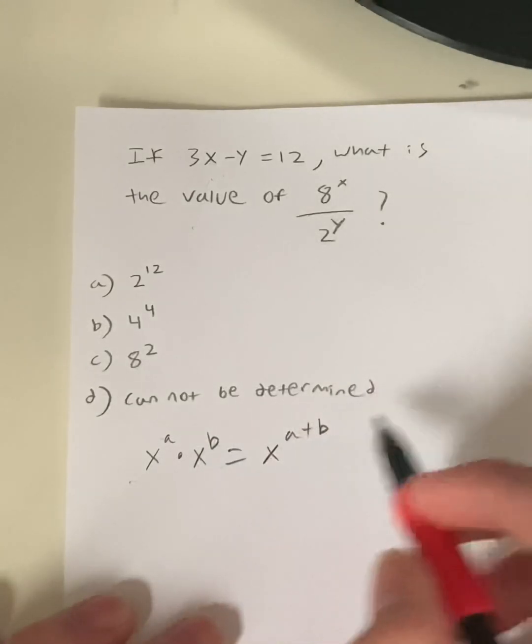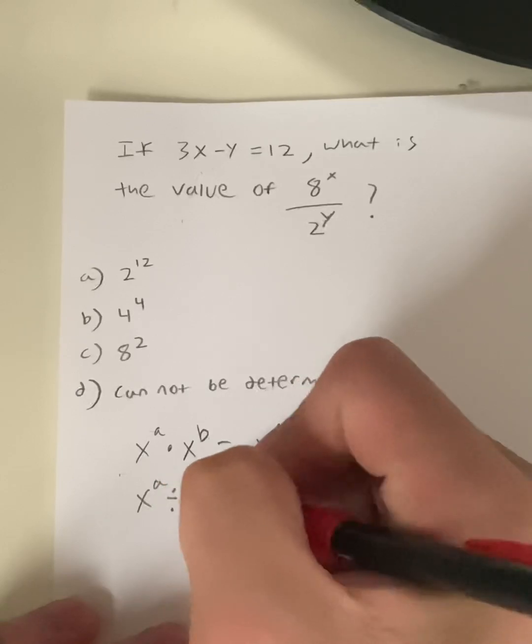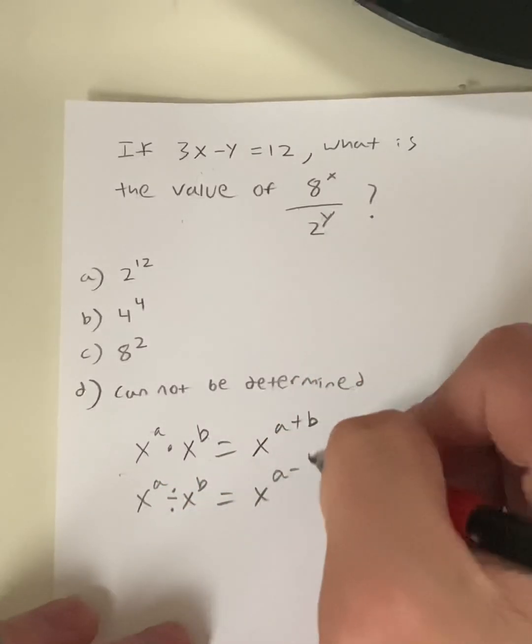You keep the same base and just add the exponents. What if it's x^a divided by x^b? That's just going to be x^(a-b).